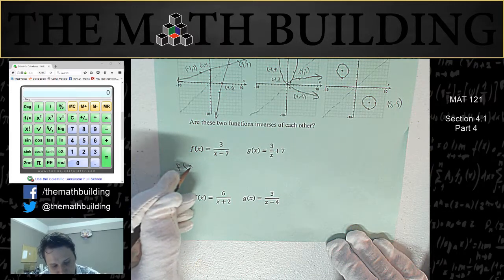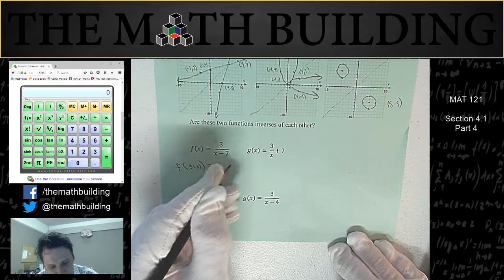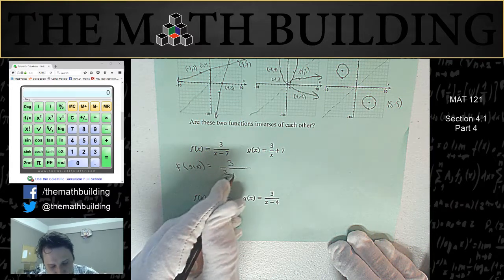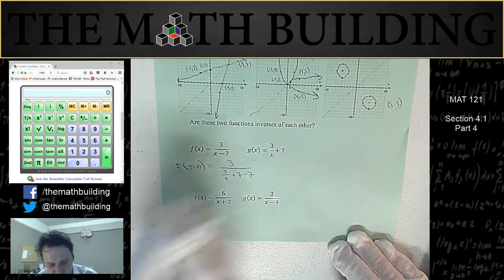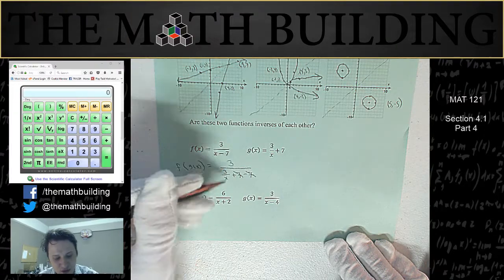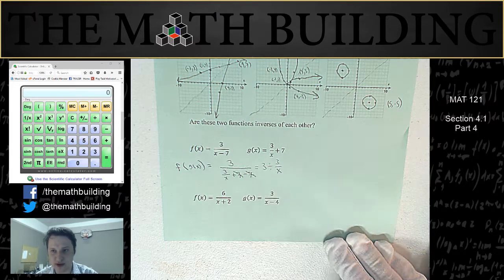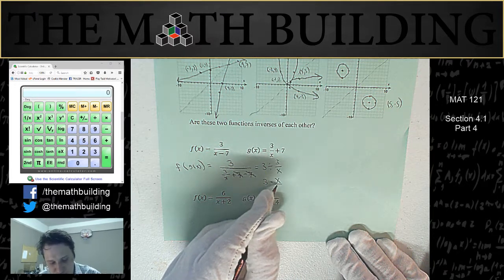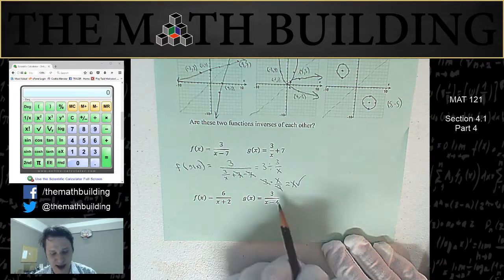So let's find f of g of x. Take f and every time you see x, replace it with all of g. So that would look like: 3 over — replace x with 3 over x plus 7 — and we still have minus 7. The 7 cancels with negative 7, so we get 3 divided by 3 over x. Copy dot flip: 3 times x over 3. The 3's cancel and we're just left with x. So f of g of x works — we get x just like we want.